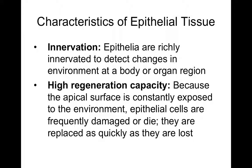All epithelial tissues are innervated. Along the respiratory tract, nerve endings can sense inhaled foreign debris and help initiate a cough reflex to get it out of your lungs. In the epithelium of the digestive tract, nerve fibers let your nervous system know that there's food present — some nerve endings are actually found in the epithelium of the stomach so you can sense the contents of the stomach.